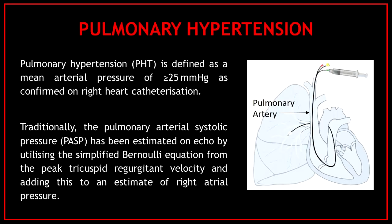In my channel you can find a very in-depth video about pulmonary hypertension, but let's remember some important bits. Pulmonary hypertension is defined as a mean arterial pressure of 25 millimeters of mercury as confirmed on right heart catheterization. Traditionally, the pulmonary arterial systolic pressure has been estimated on echo by utilizing the simplified Bernoulli equation from the peak tricuspid regurgitant velocity and adding this to an estimate of right atrial pressure.